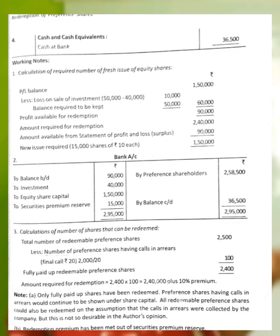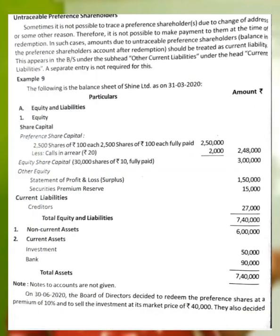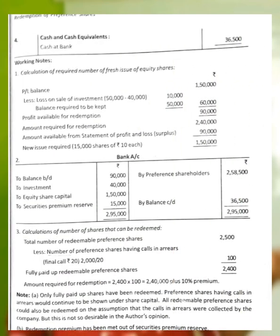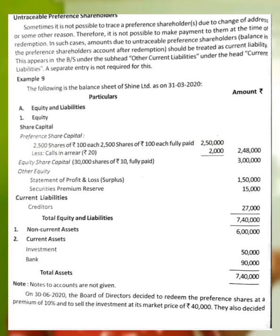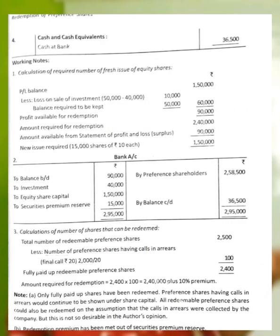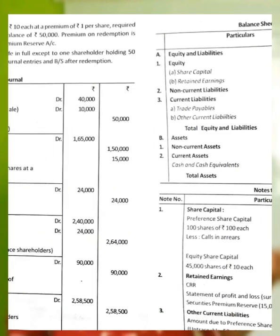The Profit and Loss account balance is Rs.1,50,000. We sell the investment at the market price of Rs.40,000. The book value of investment is Rs.50,000. Since market price Rs.40,000 is less than book value Rs.50,000, the loss is Rs.10,000. This loss reduces the P&L balance. Also, the balance required to be kept is Rs.50,000 as per the question — 'leaving a balance of Rs.50,000.'